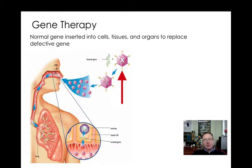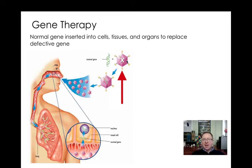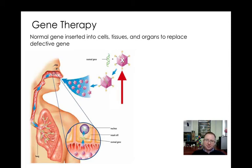Gene therapy would involve inserting a normal gene into the cell, tissue, or organ with the intention of replacing the defective gene. To move that gene into those cells we would need to use a vector. In the picture here, our normal CFTR gene is added to a virus, which serves as the vector. The virus is then taken into the body — for cystic fibrosis a good delivery method is to inhale it — and viral particles deposit the normal gene into the cells that line the lungs. That gene would then take over and produce the normal protein, alleviating the symptoms of cystic fibrosis. Viruses are great vectors because they are very good at infecting, spreading that normal gene.